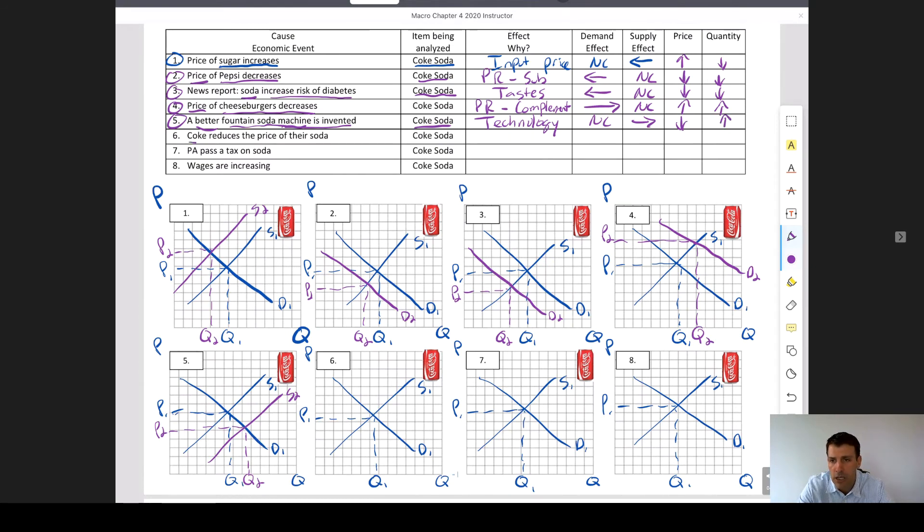Number six, Coke reduces the price of their soda. So that's a price change of the good itself. You should be thinking movement, right? So again, the curves are not shifting, we're just moving along the demand curve. So we want to draw a downward arrow, no change in supply, and go ahead and draw that accordingly.